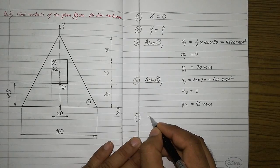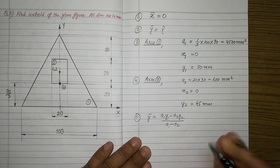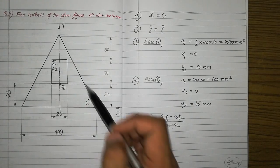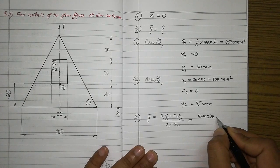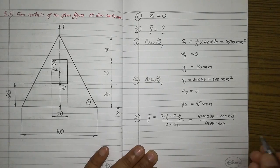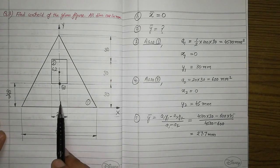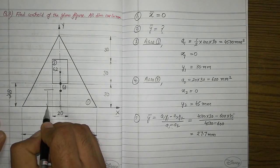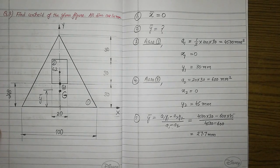We just have to calculate y-bar. y-bar = (A1·y1 − A2·y2) / (A1 − A2). We use minus signs because the composite area is obtained after subtracting the rectangular area from the triangular area. Substituting values: y-bar = (4500 × 30 − 600 × 45) / (4500 − 600). Solving this, we get y-bar = 27.7 mm. This means, measuring from the x-axis along the axis of symmetry a distance of 27.7 mm, we get point G, the centroid of this composite area. I hope this problem is clear to you. Thank you very much.